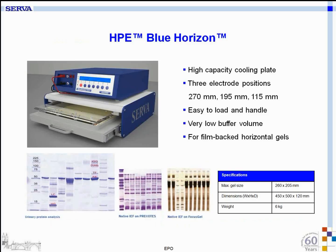The instrumentation used for isoelectric focusing is the latest technology Serva has introduced to the market — a drawer system with an aluminum oxide ceramic cooling plate offering very high cooling capacity. It comes with three electrode positions for separation distances of 270 mm, 195 mm, and 115 mm for different gel sizes. It is easy to load and handle, has very low buffer volume, and is tailor-made for film-backed horizontal gels.